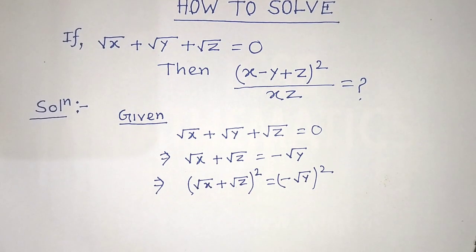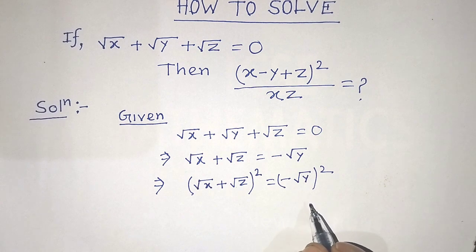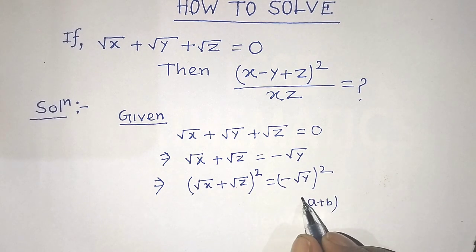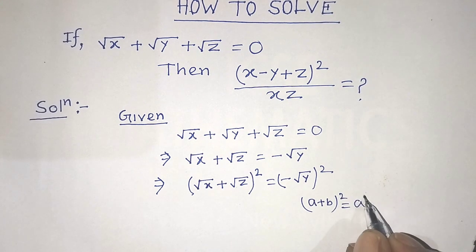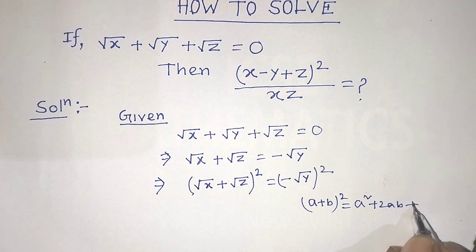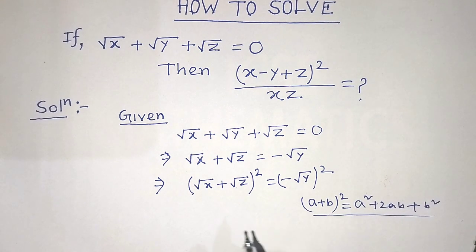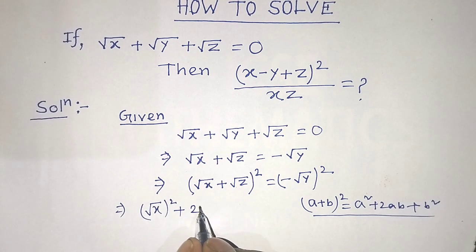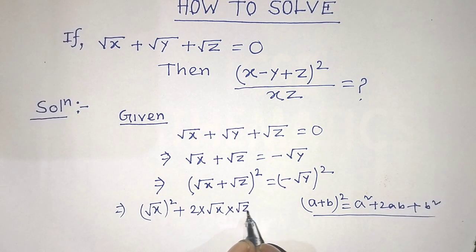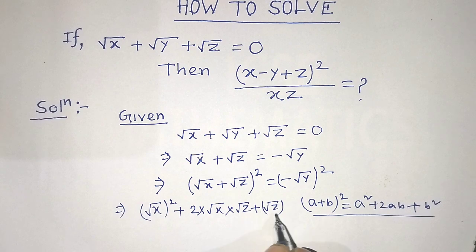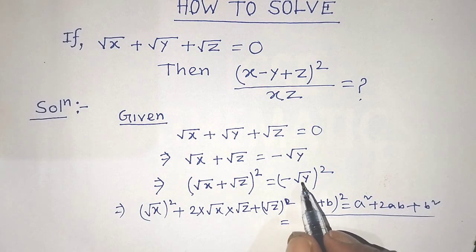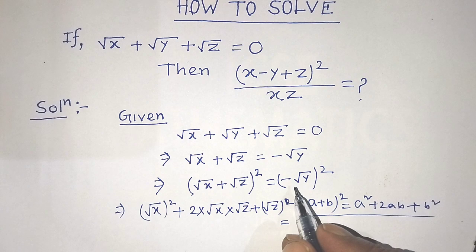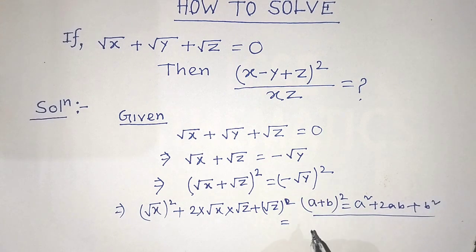To simplify the left hand side of this equation, we have to apply the formula (a plus b) whole square is equal to a square plus 2ab plus b square. So this formula we have to apply on the left hand side: (root of x) whole squared plus 2 into root of x into root of z plus (root of z) whole squared is equal to on the right hand side (minus root of y) whole squared.